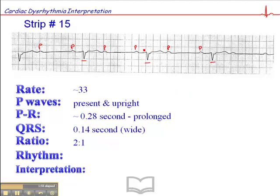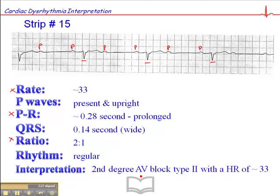Now I know this QRS configuration is a little odd and I'm going to talk about that a little later. The rhythm is regular and this is another important factor. So given the heart rate, given the fact that we have a PR interval which is prolonged, we'll give you that much, but it's consistent, that's important, and the ratio which is 2 to 1, the interpretation of this is a second degree AV block type 2 with a heart rate of 33.